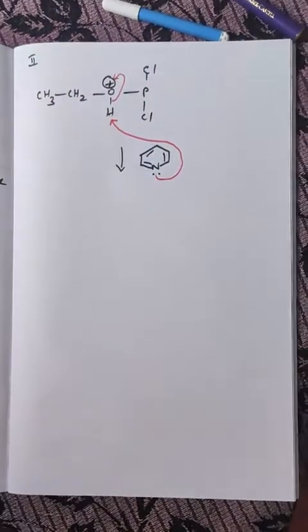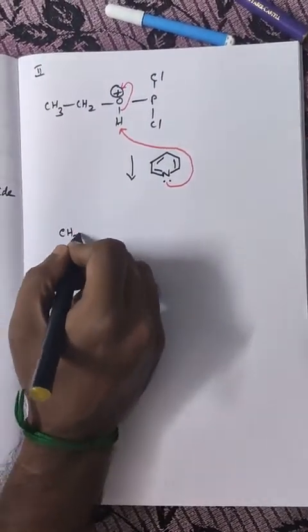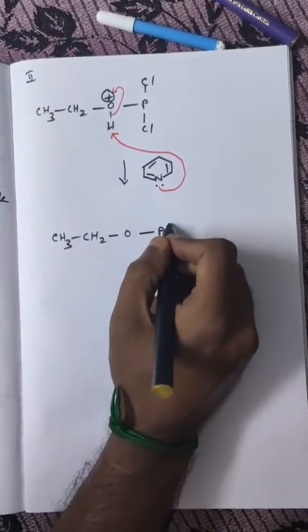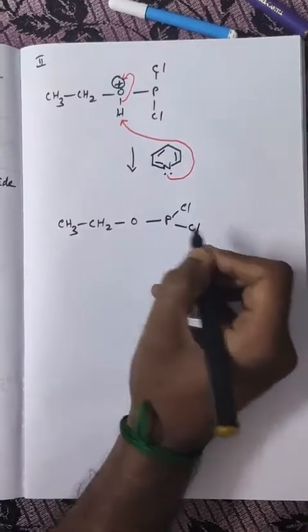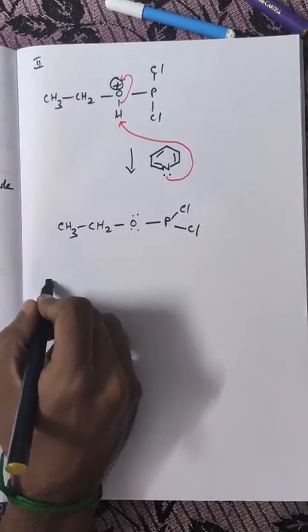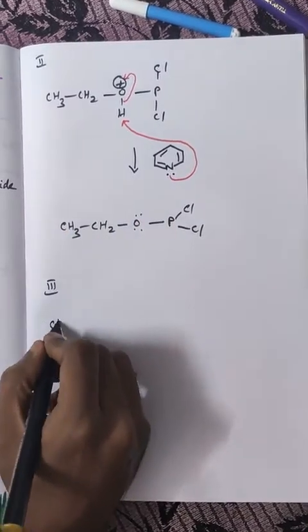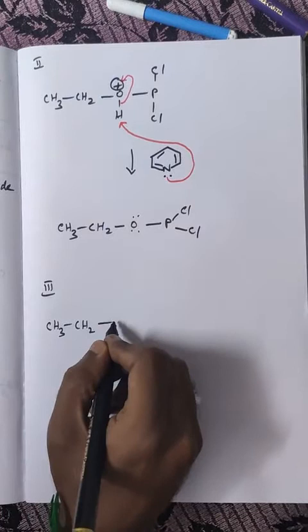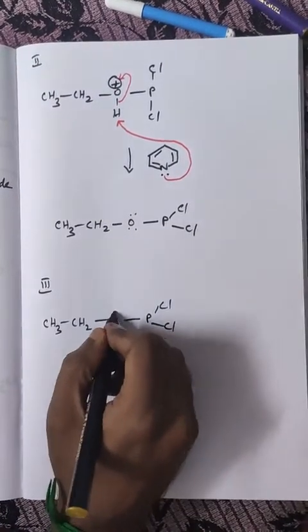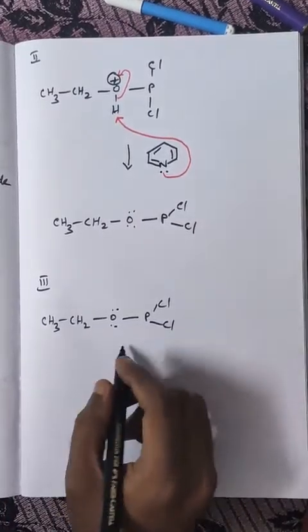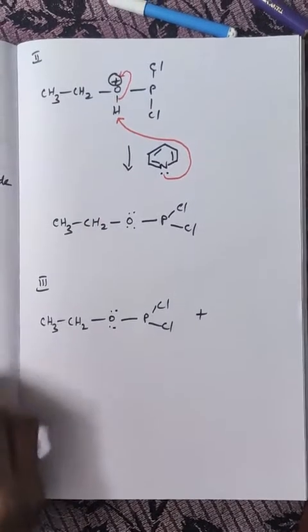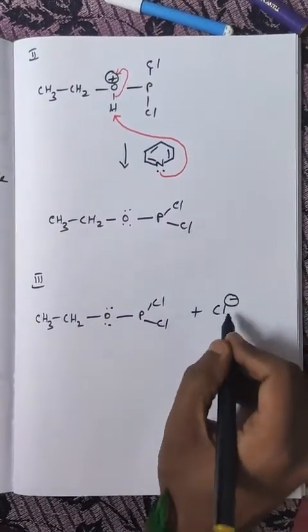The remaining species will be CH3-CH2-O-PCl2 with the lone pair of electrons. Next, step three. Let us take this species CH3-CH2-O-PCl2. It is made to react with the nucleophile generated here. The chloride ion is going to act as a nucleophile now.